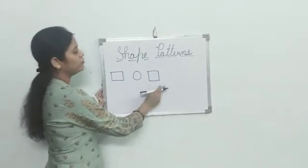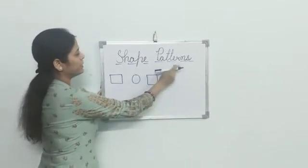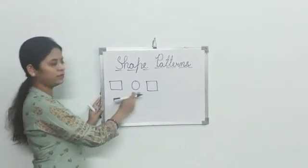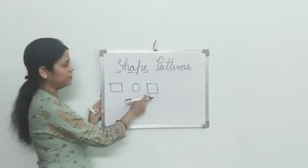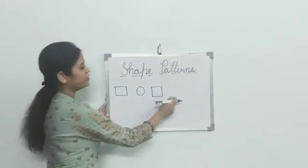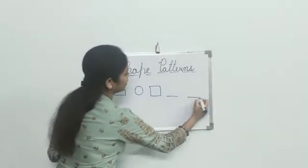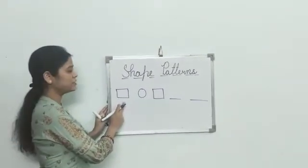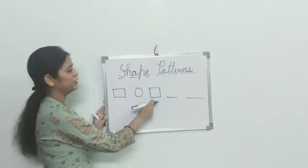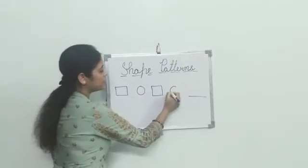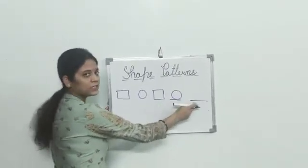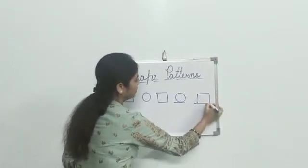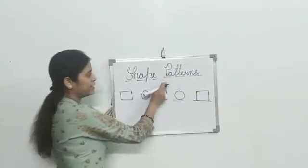Let's take one more example of shape pattern. Look carefully. First shape is square, then circle, then square. Now tell me — which shape comes next? Yes, check: square, then circle, then square, then circle. Very good! Then after circle comes square. It means it is the shape pattern.